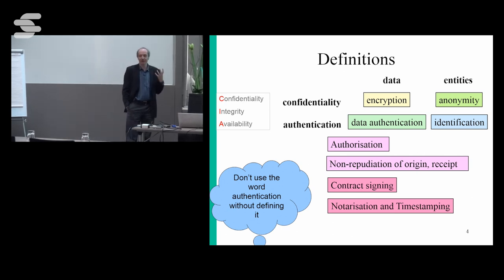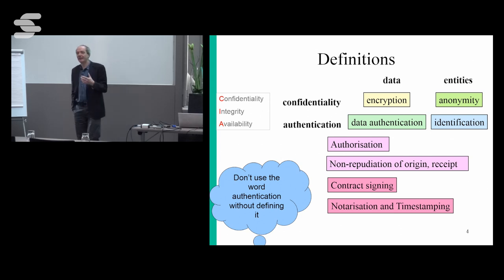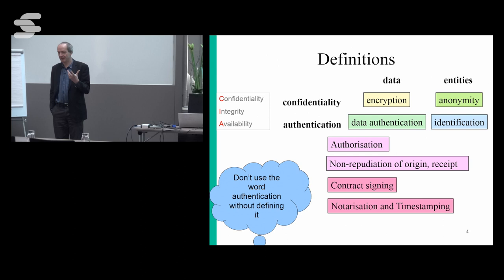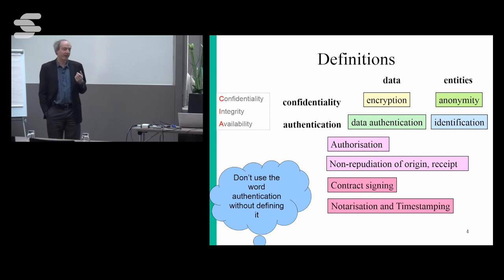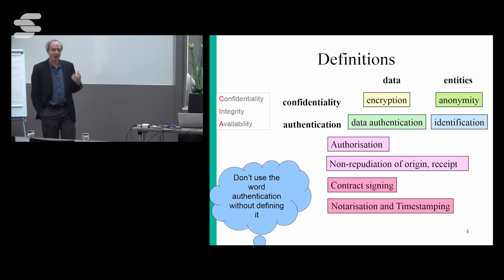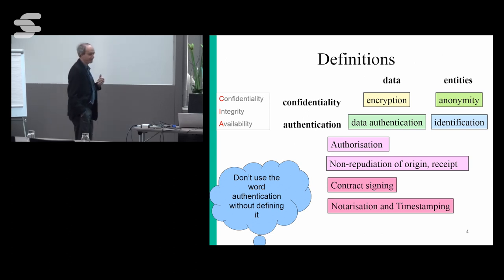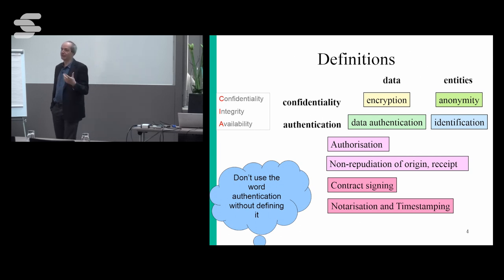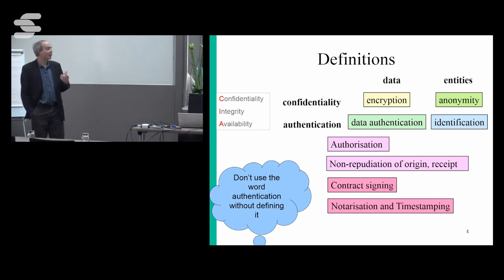Availability is very important. We kind of lost track of it until the late 90s when the first denial-of-service attacks came and people started worrying more about it, so we now have more malicious attacks based on availability. It's not always clear that crypto can help, because very often crypto makes your system slower and you may have more vulnerabilities to availability if you use crypto. But there are crypto tricks using proofs of work where crypto can help availability.